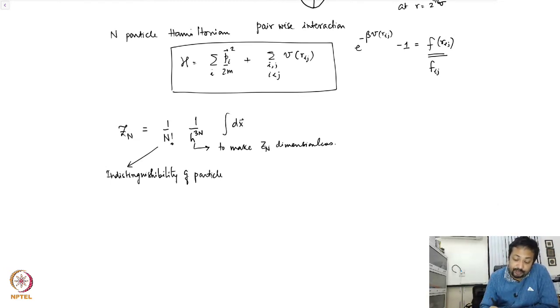And if you have forgotten how this comes, the n factorial comes from the indistinguishability of particles. This factor is essentially to make Z_n dimensionless, because after all k_B T ln Z_n is going to give you the free energy. And then of course you have integral d of x^n e to the power minus beta H, where this vector is now the set r_1, r_2, r_n, p_1, p_2, p_n.